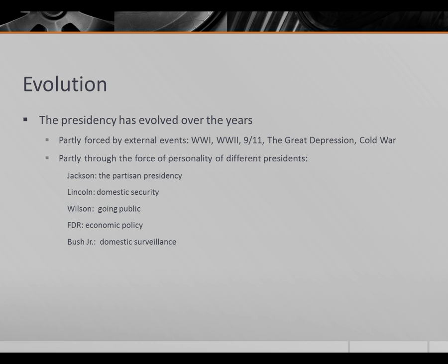It's also the case that particular presidents chose to lobby for more powers for themselves and change the nature of the presidency — they didn't have to, but they did. Andrew Jackson was the first partisan president, the first president who was very clearly the leader of his party. Very early on — Jackson was the seventh president — the presidency lost its above-the-fray character and became very much involved in partisan politics, with the president campaigning and helping congressmen and senators win seats.